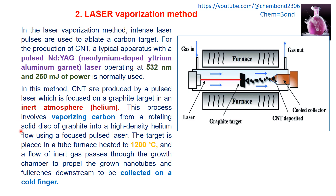This process involves vaporizing carbon from a rotating solid disk of graphite. The laser ablates carbon from the rotating graphite disk into a high-density helium flow using a focused pulsed laser. The target is placed in a tube furnace at 1200 degrees Celsius with a flow of inert gas passing through the growth chamber, propelling the grown nanotubes downstream to be collected at the cooler end.